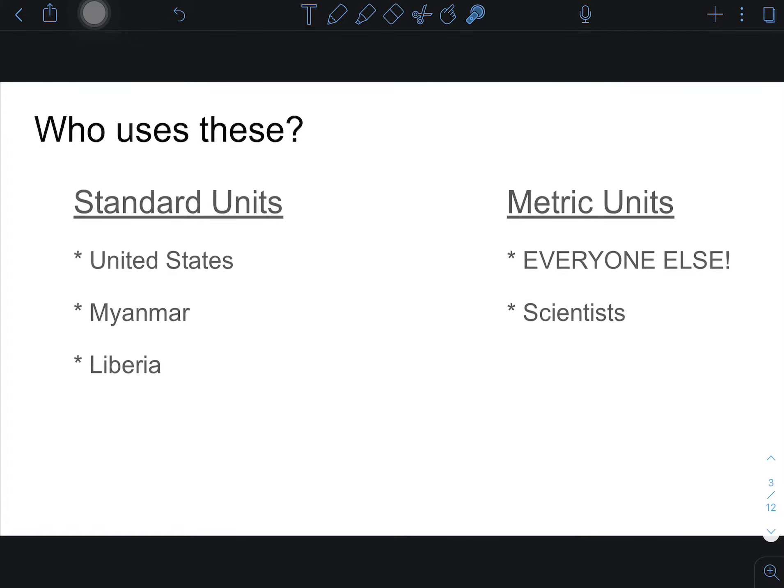So the scientific community publishes their findings using the metric system because everyone else in the world uses the metric system. It's that international being able to exchange information. So are we going to switch in the United States to the metric system? I always kind of giggle at that. My grandpa, who was 92 years old, he always told me the story about back when I was a kid, talking like 1940s.